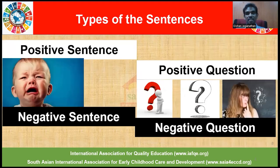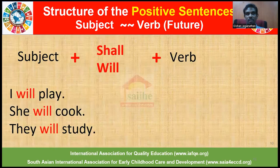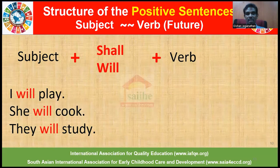First, we'll look at positive sentences in detail. The structure of a positive sentence in future tense is: subject plus shall or will plus the verb. For example: I will play, she will cook, they will study. This is some event which is going to happen in the near future, which has not yet occurred but will be happening. The verbs are play, cook, and study.